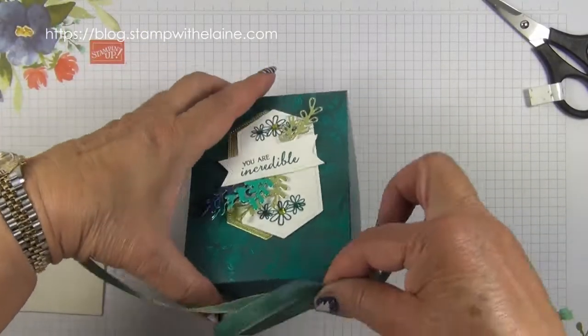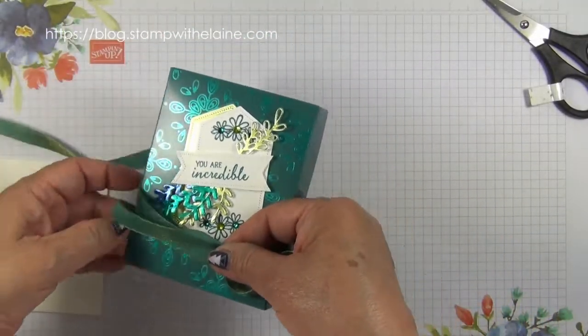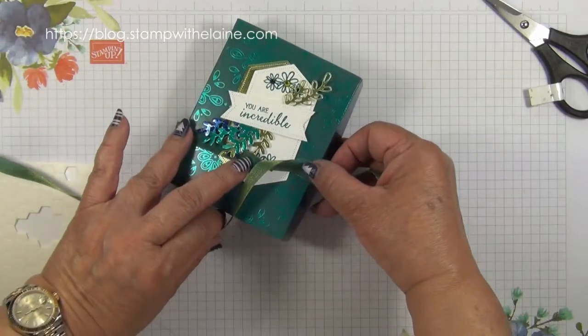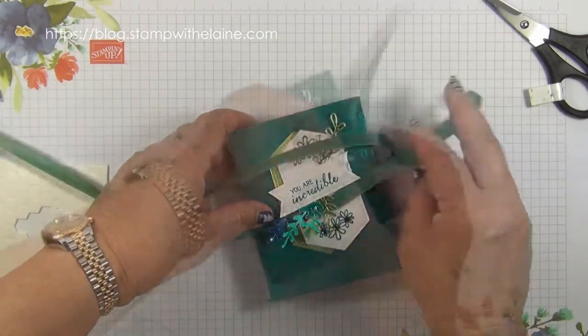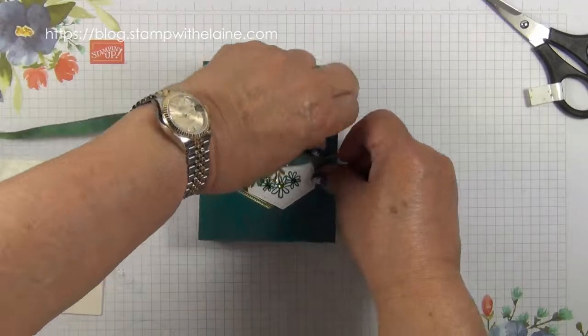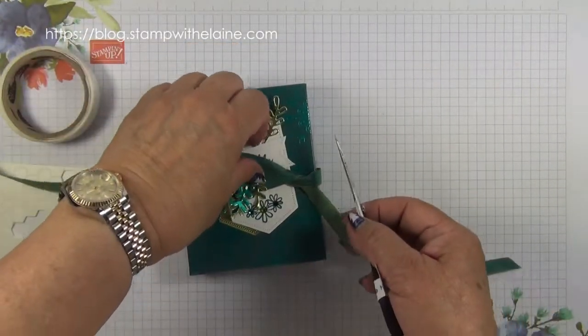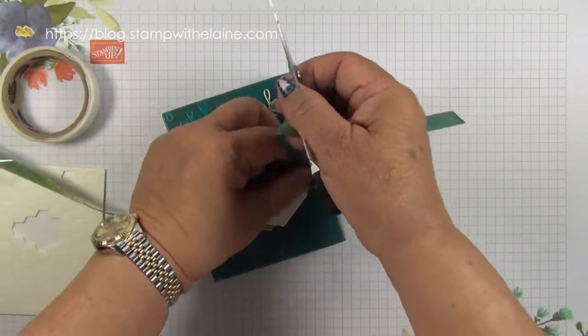Now grab the ribbon and pop it round your box. Tape that underneath. Grab a glue dot and then just pop it underneath here.